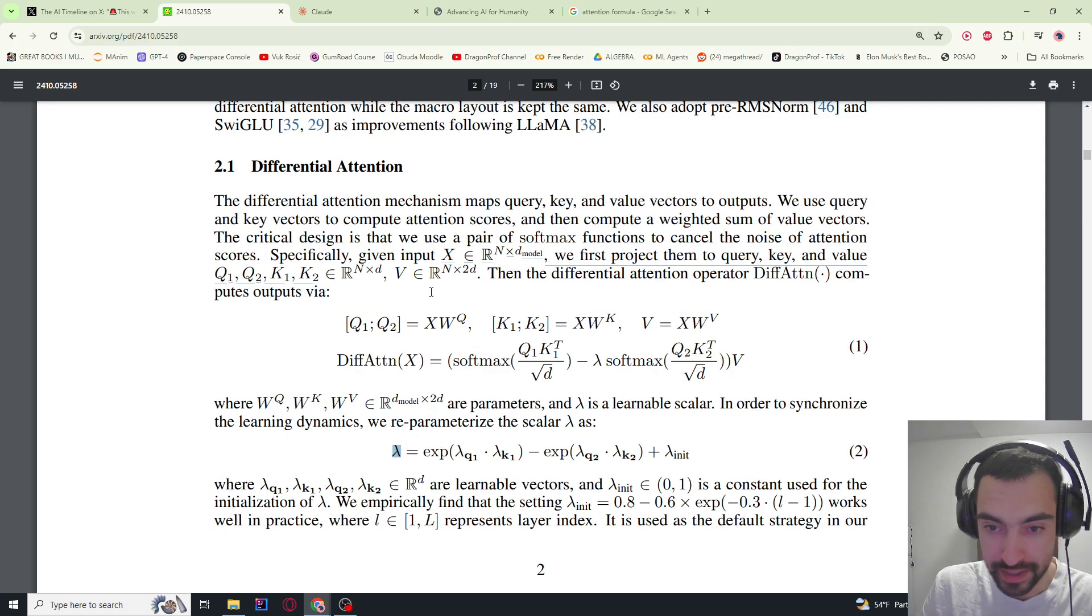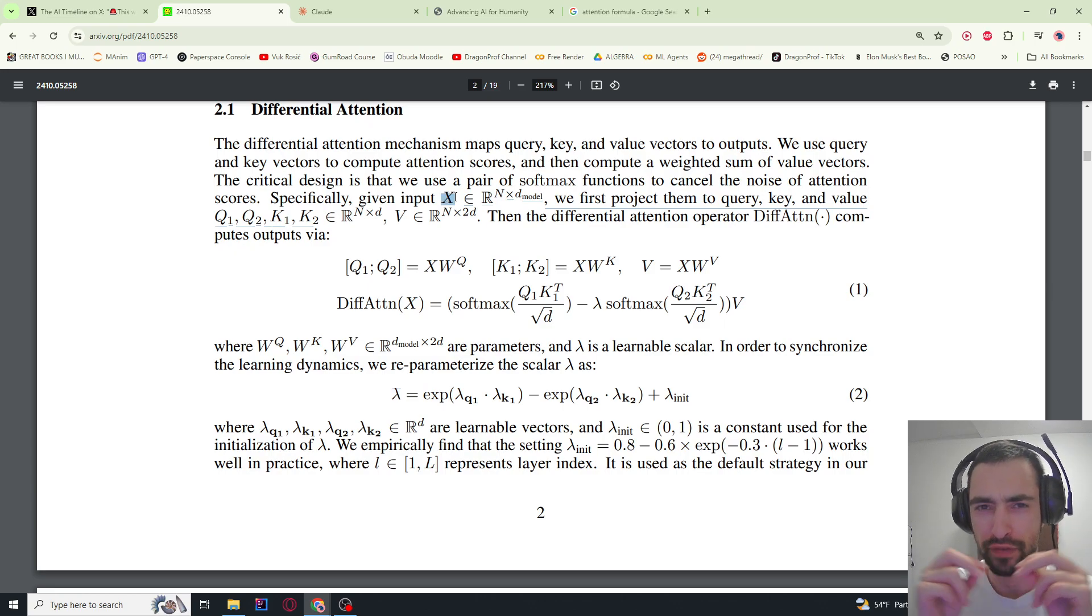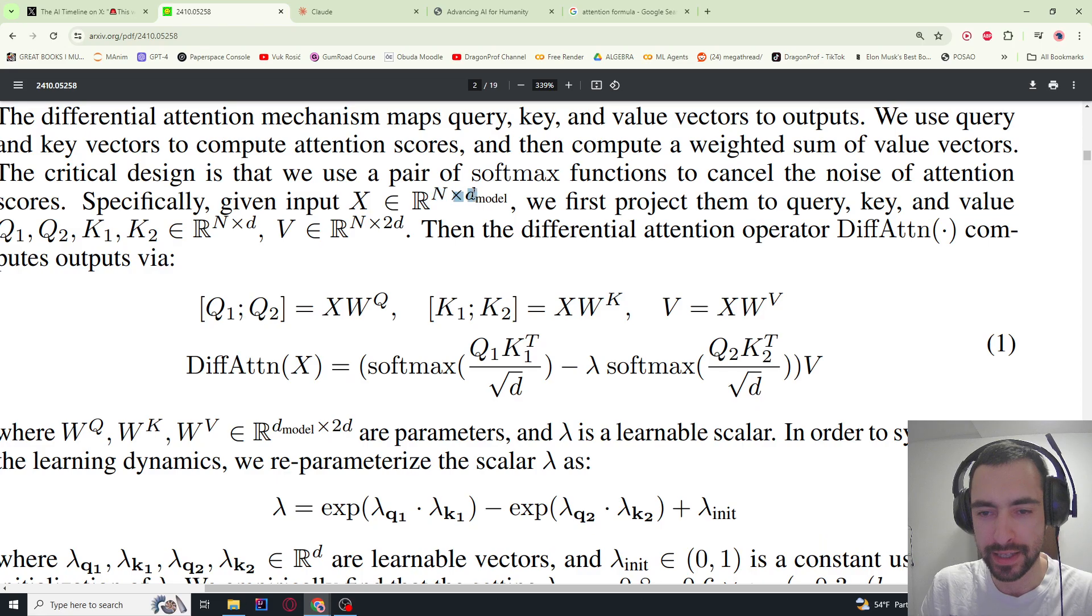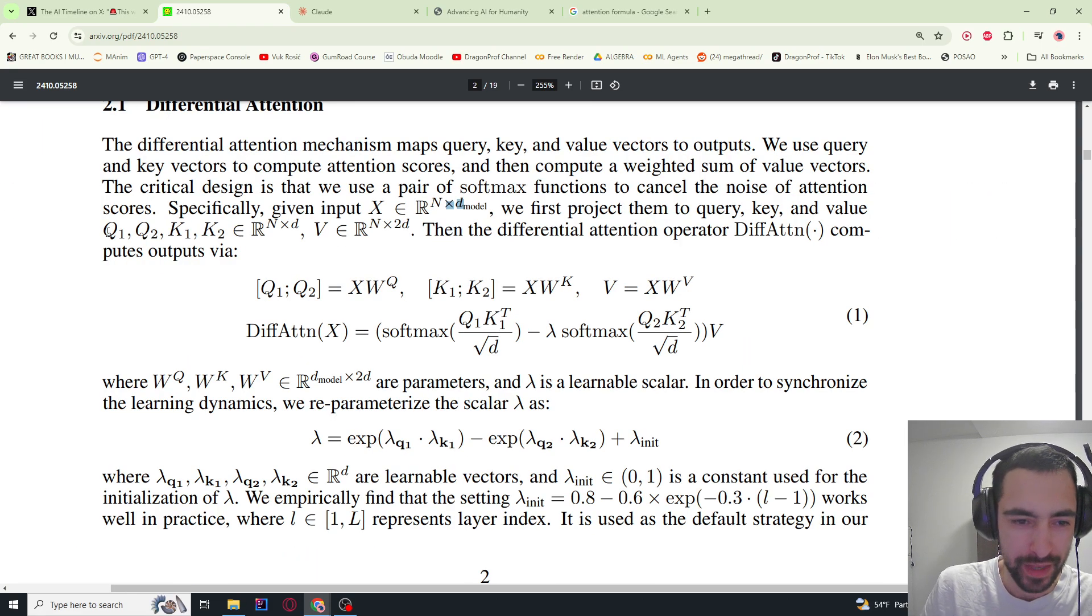Looking at this math, we have X as input of a bunch of tokens, and each token is represented in a vector embedding. N is the number of tokens, D is the dimension of each embedding vector for each token. We have queries: first query matrix, second query matrix, first key matrix, second key matrix, and only one value matrix but this has a 2D dimension. We get the input X which is tokens times, and we multiply with this weights matrix for queries, and this weight matrix creates one query matrix and second query matrix—two of them. Same here, and you just need one value matrix.